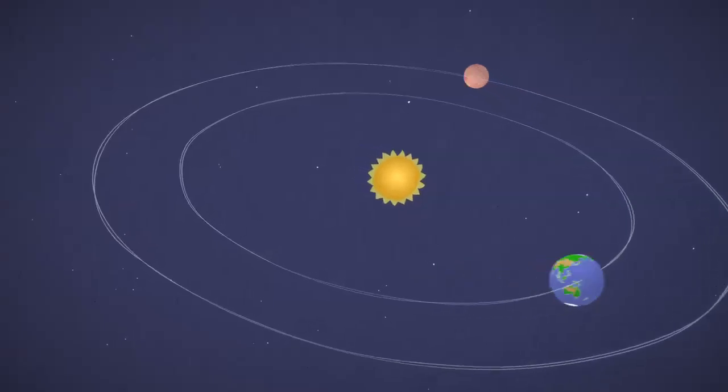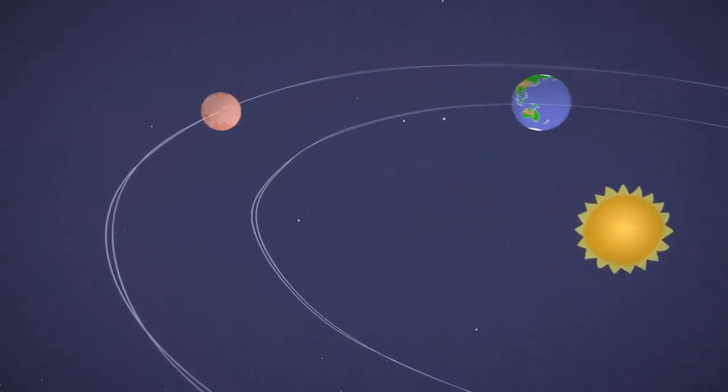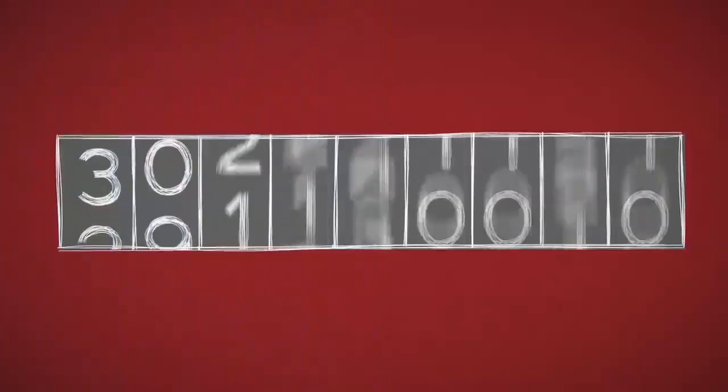About every two years, the two planets are in perfect positions to get to Mars with the least amount of rocket fuel. That's important. The total trip is over 300 million miles.